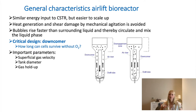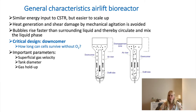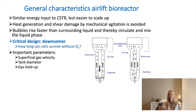Mixing occurs because bubbles rise faster than the surrounding liquid, creating distribution. However, one key design parameter to start with is the size of the downcomer. The liquid goes up and then must come back down, and during that descent there is a period without oxygen. In a small-scale reactor this is not a problem, but in large reactors — such as towers 60 meters high — this is a critical design parameter. You need to calculate whether the cells can survive that long without access to oxygen.